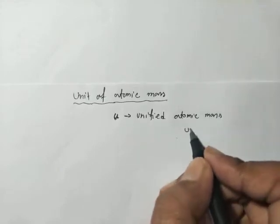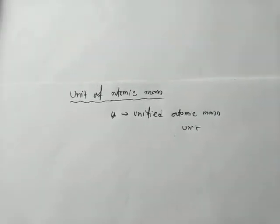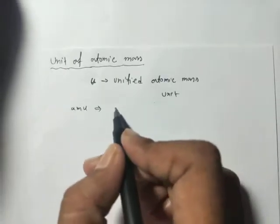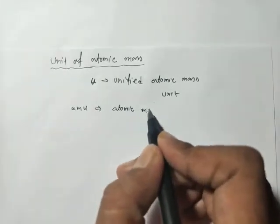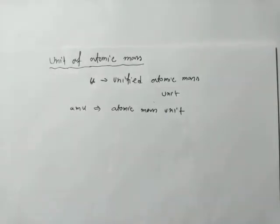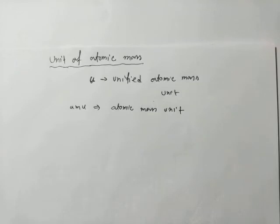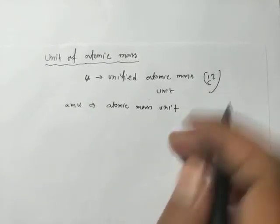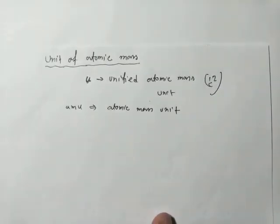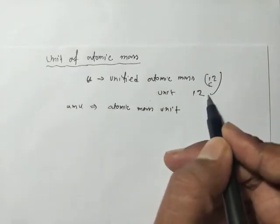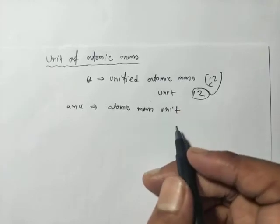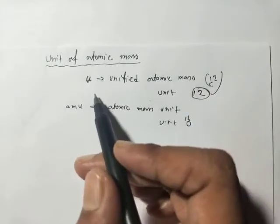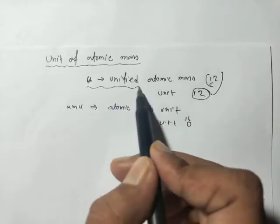There is another kind of atomic mass unit which is called amu. This is atomic mass unit, but there is a basic difference between these two. U is the unified atomic mass unit. With respect to oxygen-16 isotope, in physics, especially in nuclear physics, we will use this unified atomic mass u.